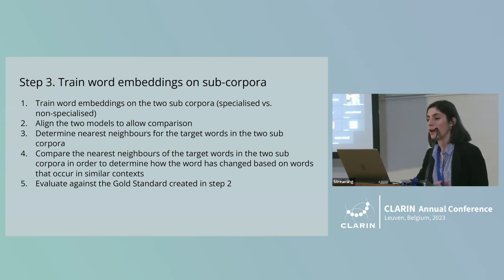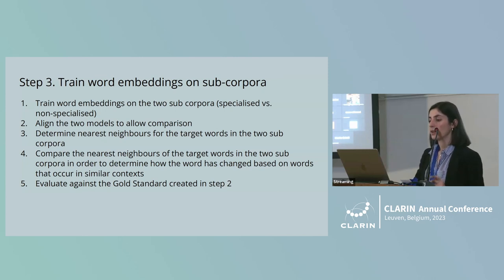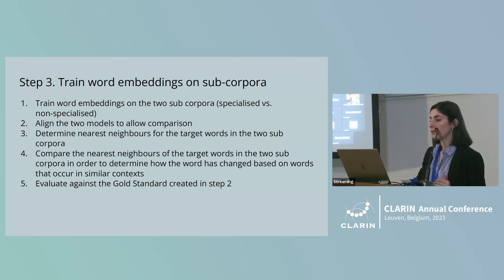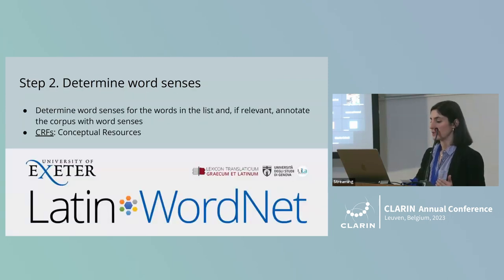On step three, we train word embeddings on the two subcorpora — non-specialised texts and specialised medical texts. We train the word embeddings model on the two subcorpora, align the two models to allow comparison, and then determine the list of nearest neighbours for the target words in the two subcorpora. Comparing the nearest neighbours allows us to determine how the word has changed based on words that occur in similar contexts.